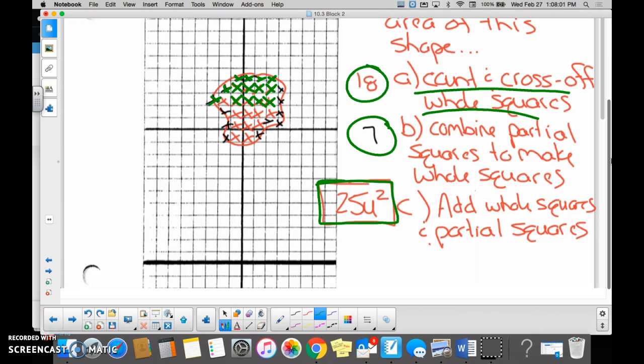You can cross out the whole squares first, combine partial squares second, add them together, and you get your area. Got it? Yeah. Questions?